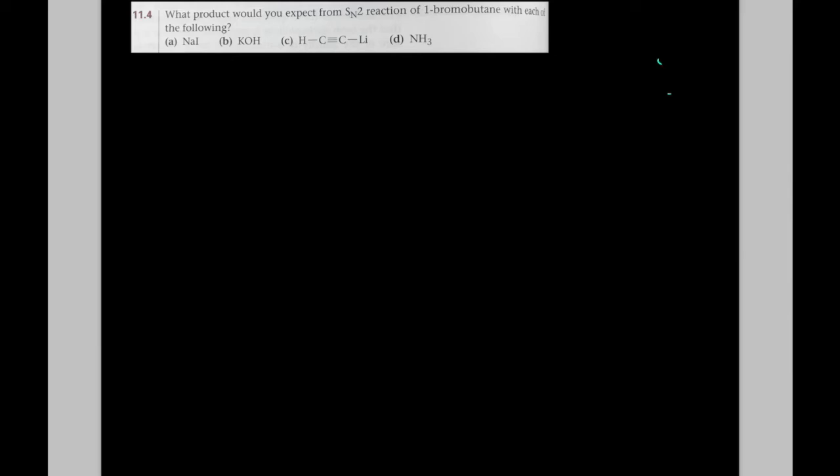Welcome back. Let's do problem 4 from the McMurray 7th edition textbook. We've got 1-bromobutane, a primary alkyl halide. That's carbon 1, and I'll dot that carbon. That's sometimes referred to as the alpha carbon.